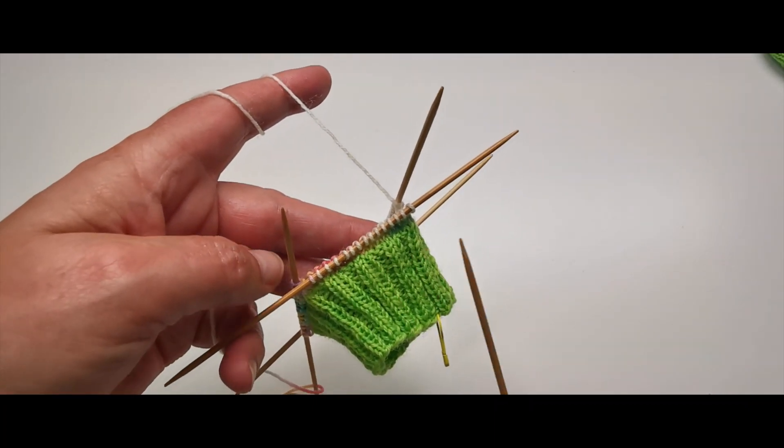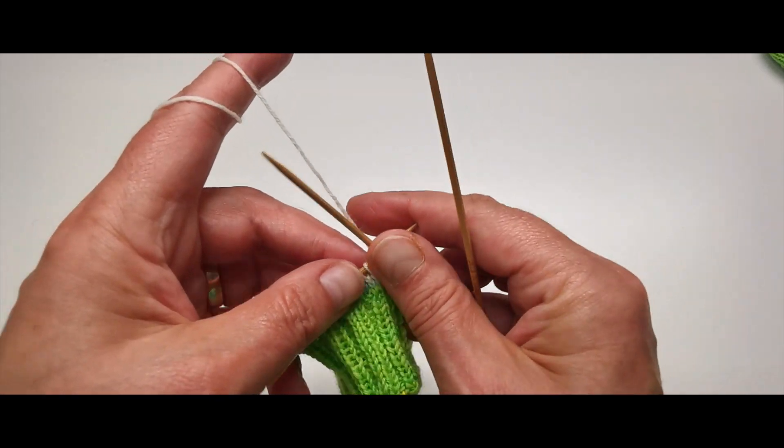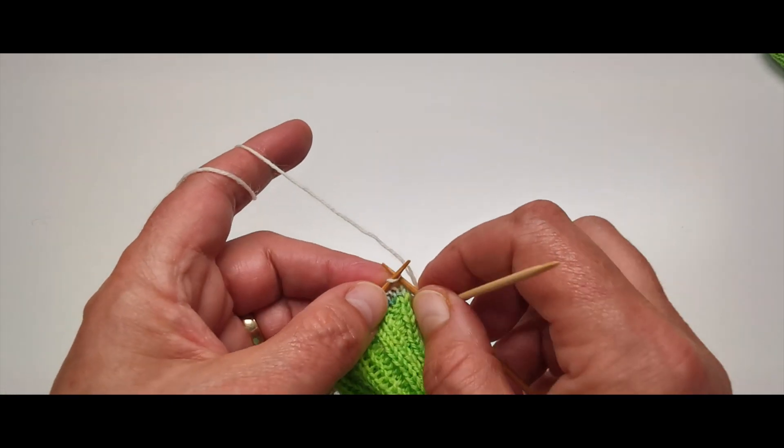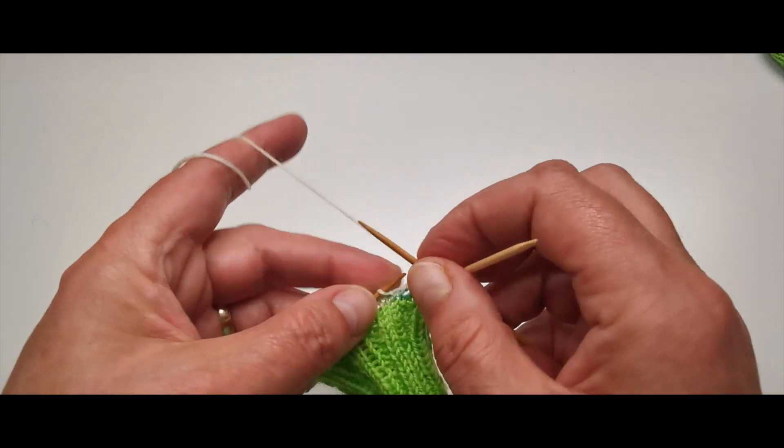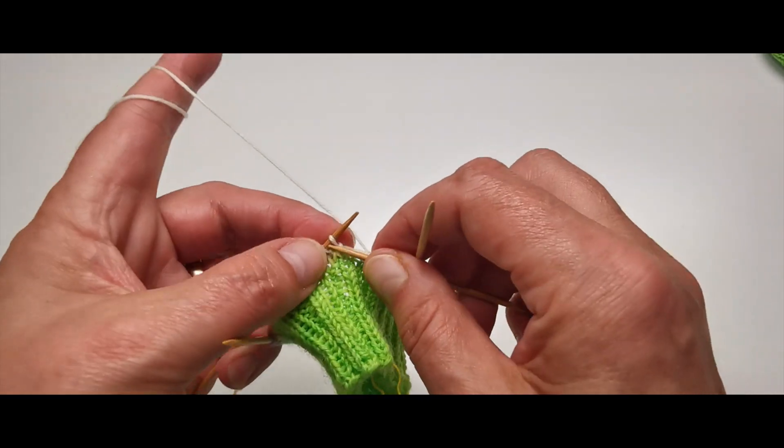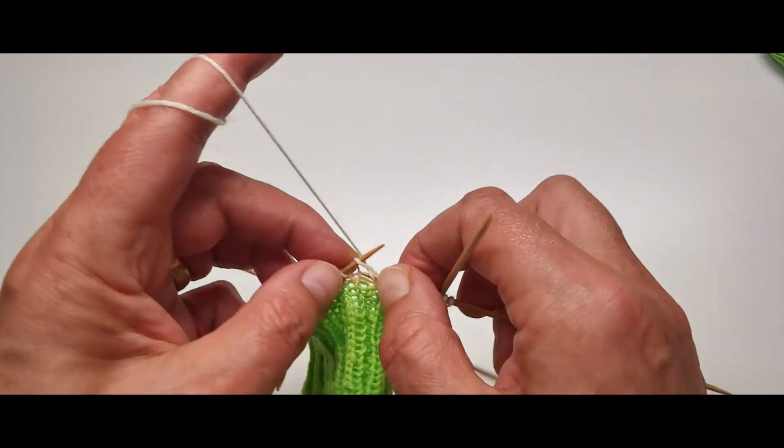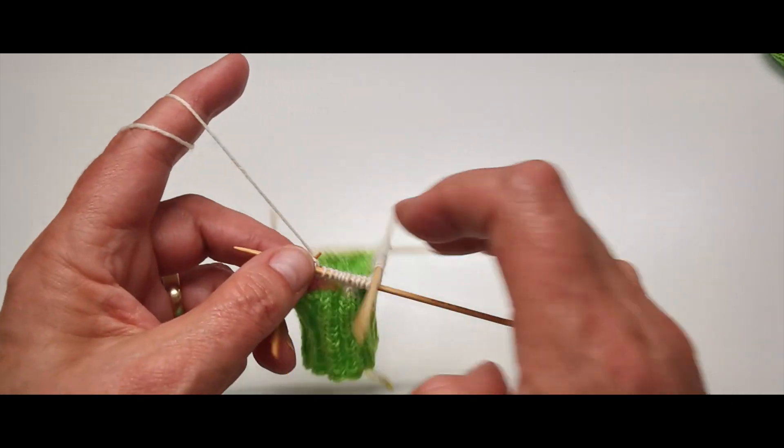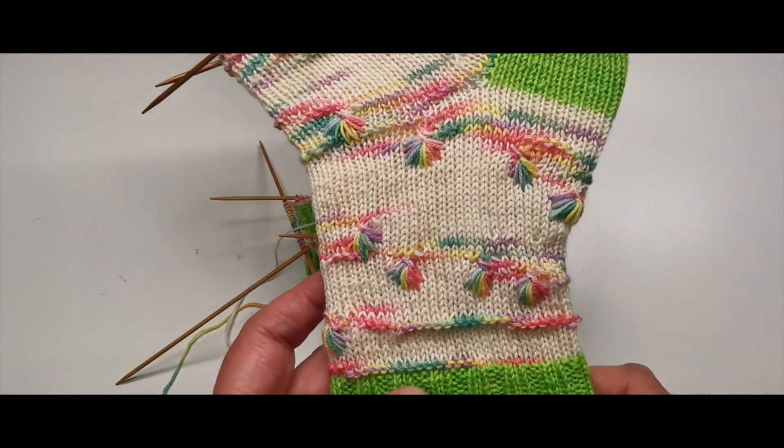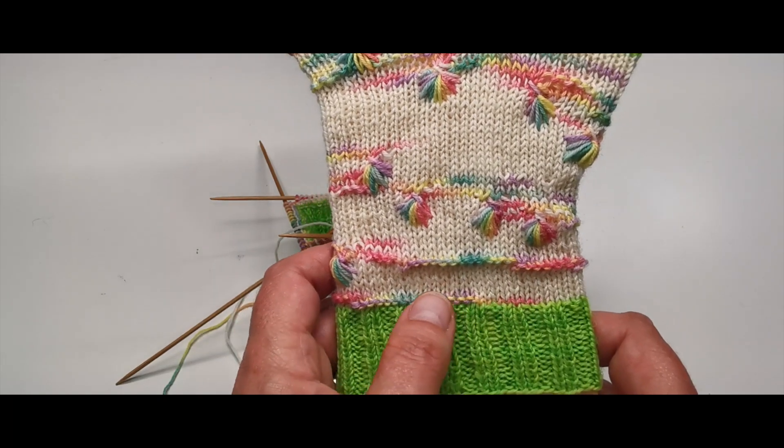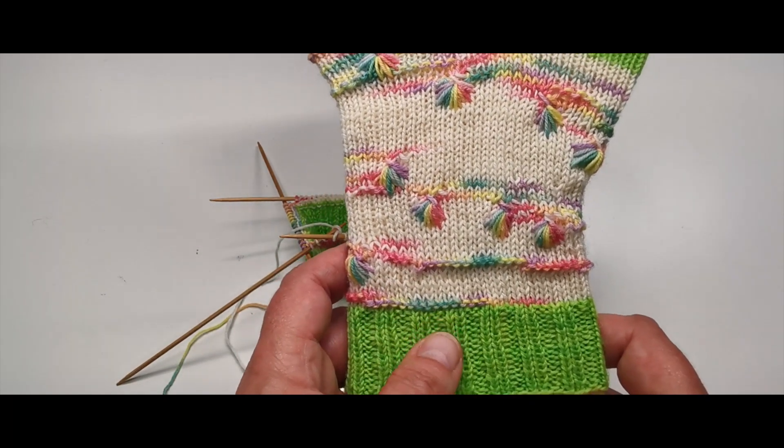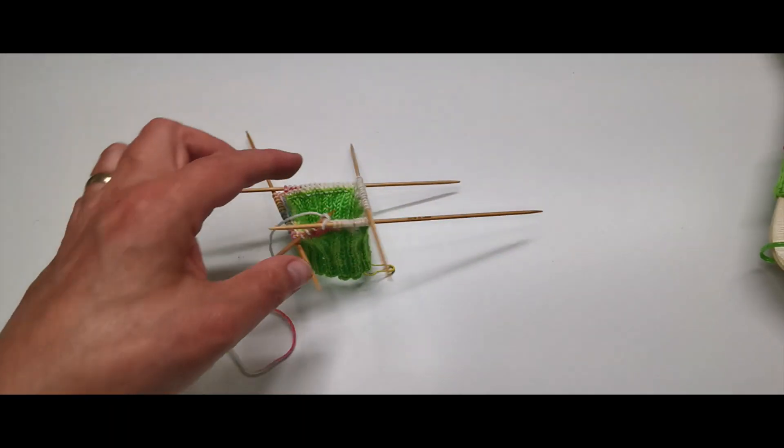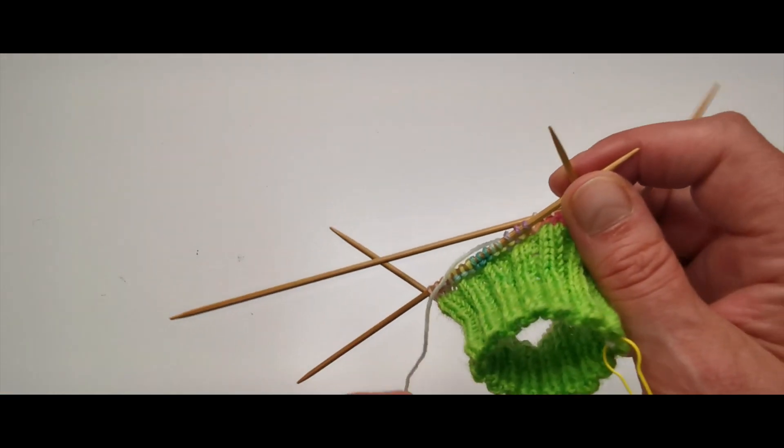In dem Zwei-Rechts-Zwei-Links-Teil, das bleibt dir selber überlassen, stricke ich persönlich keine Sternschnuppe im Regenbogen. Du kannst natürlich eine Sternschnuppe stricken, ganz wie du magst. Ich persönlich mache das nicht. Ich habe das Bündchen gestrickt und habe bislang nach dem Bündchen nur glatt rechts gestrickt.